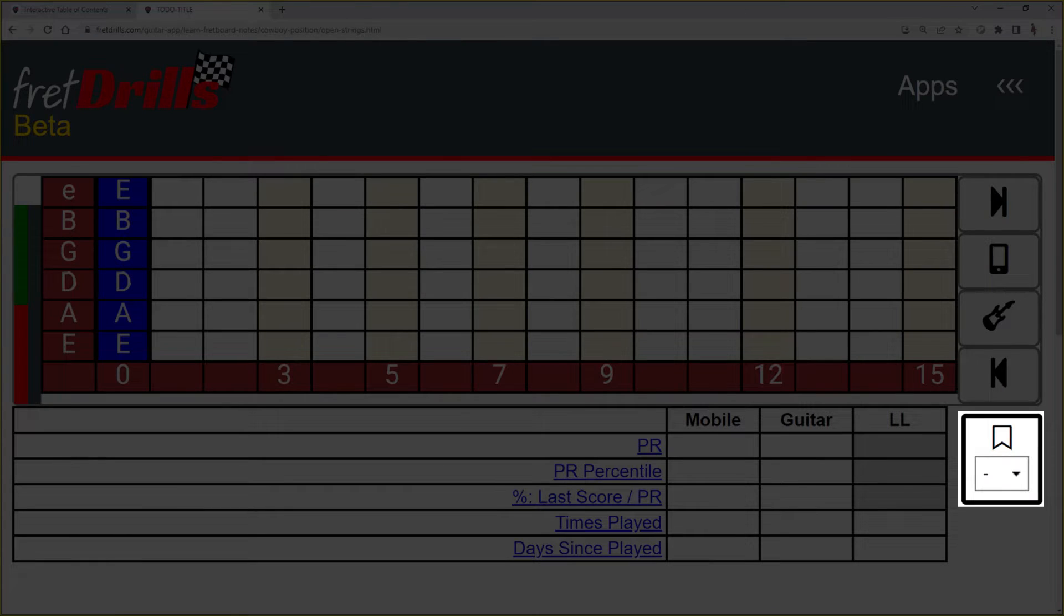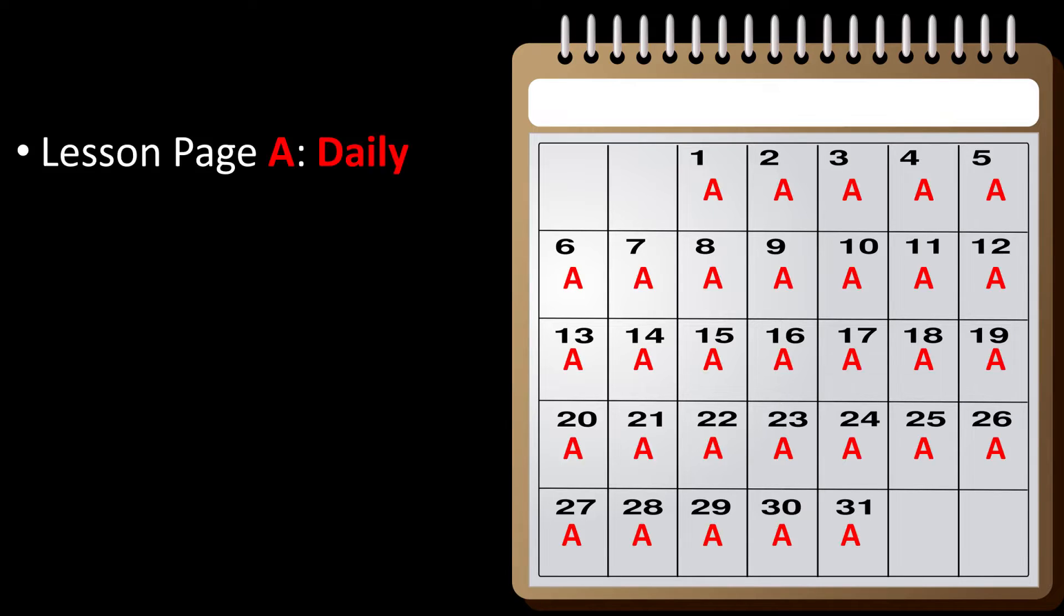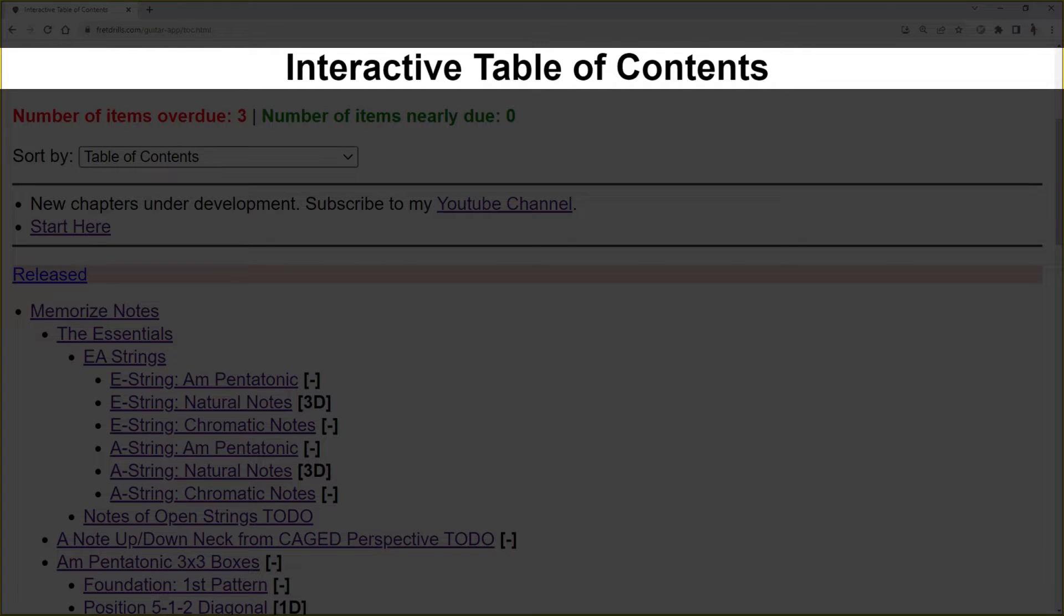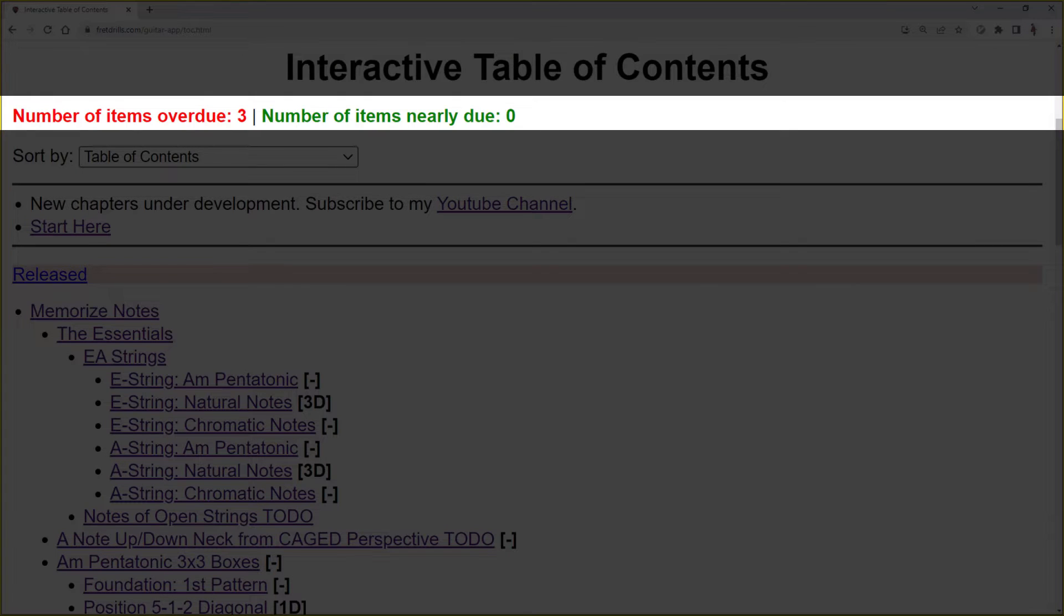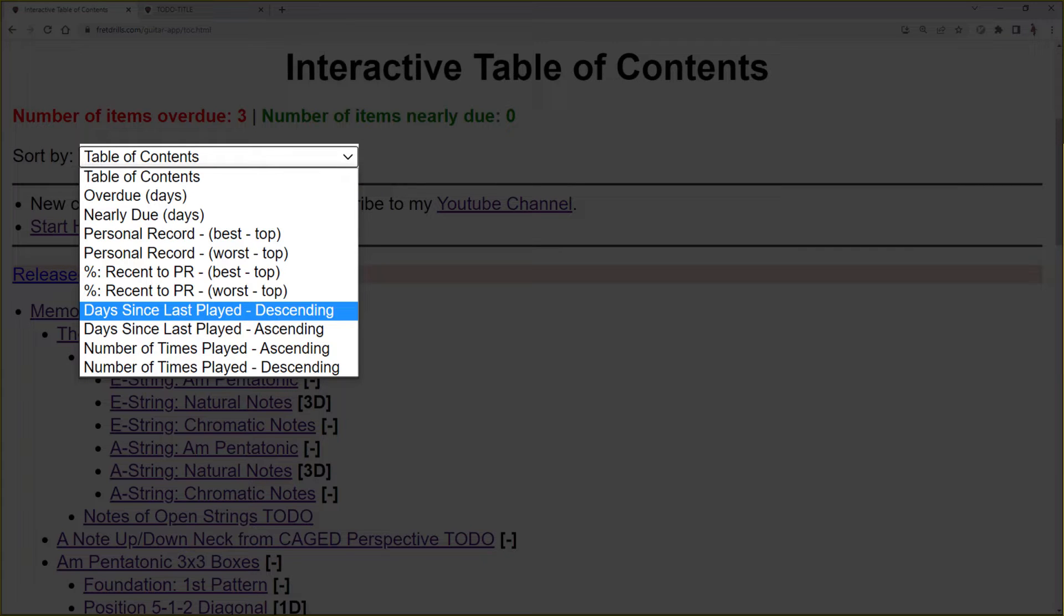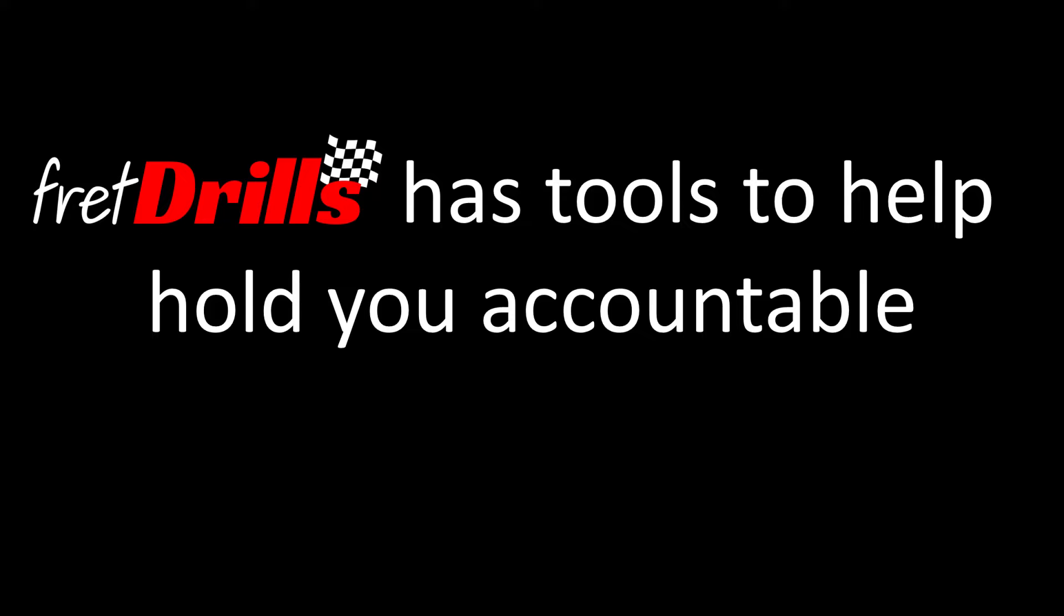The first thing I would do is select a bookmark interval of 1D for every day, as this is a new lesson to you. You will assign the repeat interval for each lesson page according to their memorization needs. When you click apps to return to the interactive table of contents, it will tell you if you have lesson pages that are overdue. You can also sort by the date last played, among other parameters. This is one of the ways to use Fret Drills to hold you accountable.